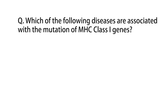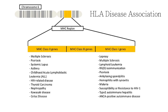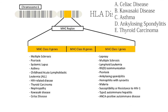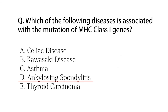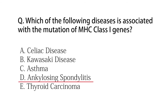Now let's come to the last question: which of the following diseases are associated with mutation of MHC class 1 genes? Looking at the chart, we can easily differentiate which diseases fall under MHC class 1 gene mutations. Other than option D, that is ankylosing spondylitis, all the other diseases fall under MHC class 2 gene mutations. So the answer here is D.